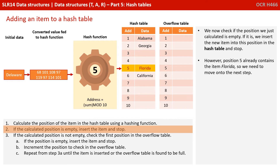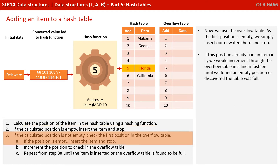We now check if the position we just calculated is empty. If it is, we insert the new item into this position and stop. However, position 5 already contains the item Florida, so we need to move on to the next step. Now we use the overflow table — as the first position is empty, we simply insert our new item here and stop.